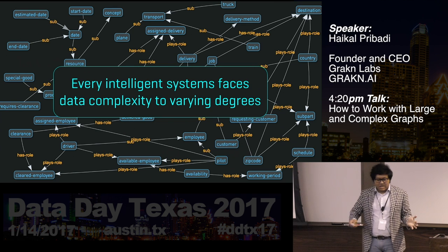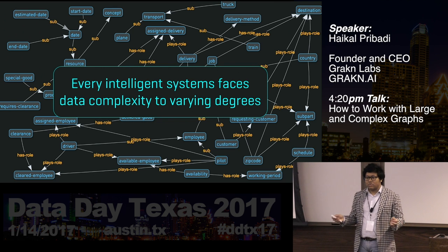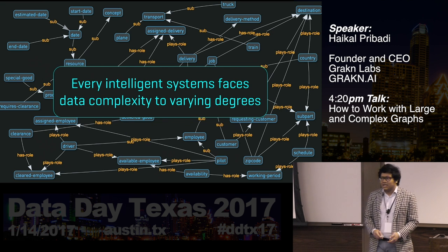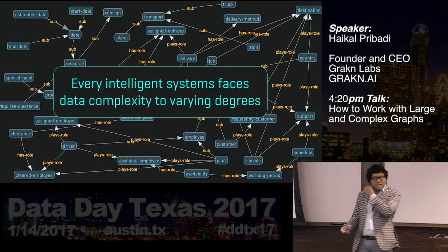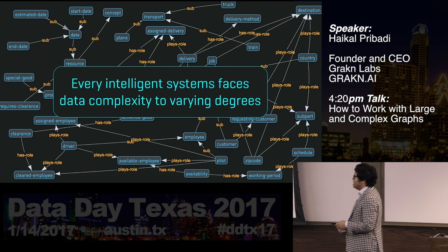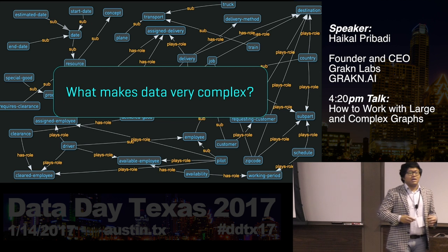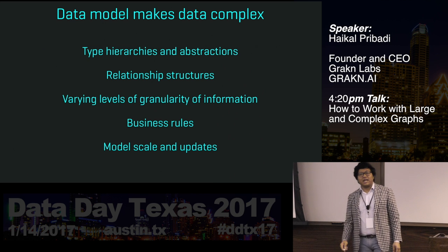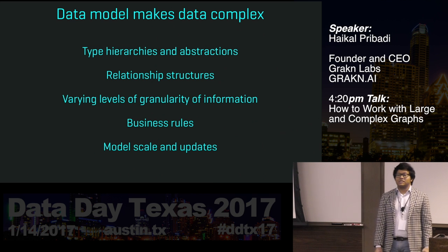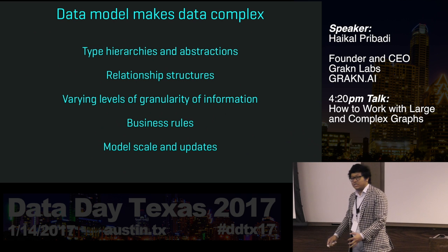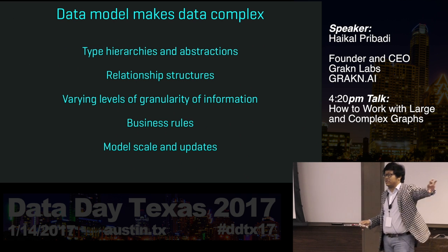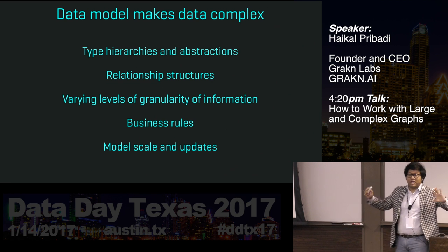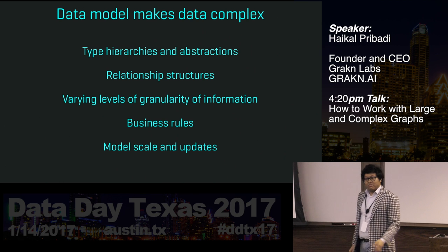When do intelligent systems face this problem? The rule is simple: if you want to make a system more intelligent, you've got to know more. If you want to know more, you need to collect more. So to build AI applications, you're going to face more and more of this problem of data complexity. What do I mean by saying data is complex? What makes data complex is the data model. When you're integrating information from many different sources, and your client needs you to keep those sources of information contained in the same model, the job gets really hard.